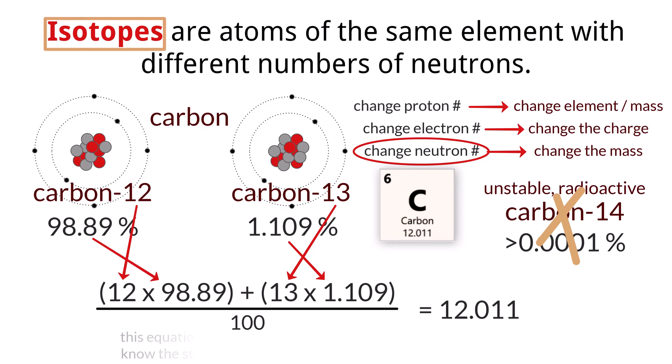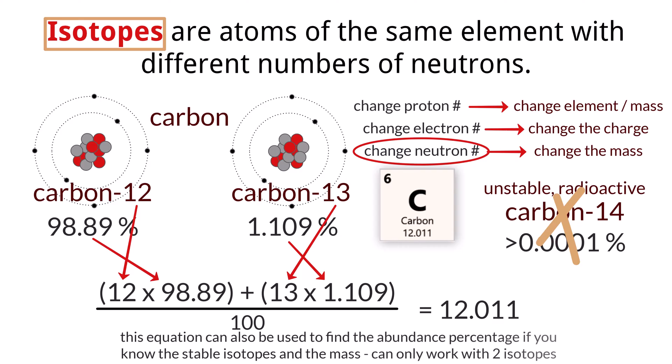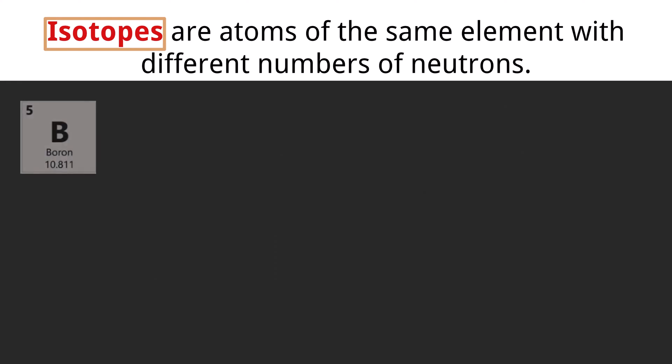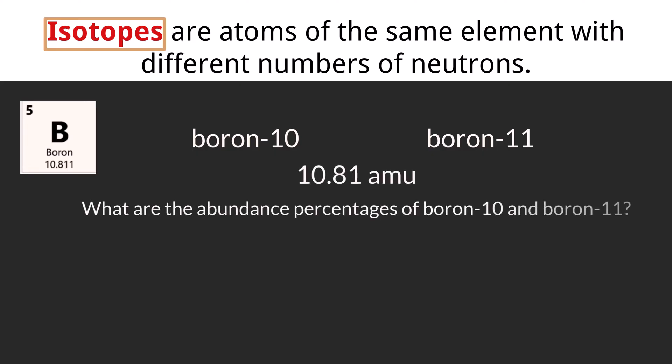You can also use this information to work backwards to find out what the relative abundance of each isotope is if you were to have the atomic mass. But this only works when an element has two known stable isotopes. Take the element boron, which has two stable isotopes in boron-10 and boron-11. Given that the relative atomic mass of boron is 10.81, what are the abundance percentages of these two isotopes?